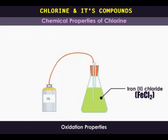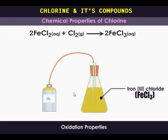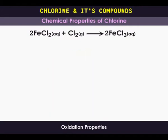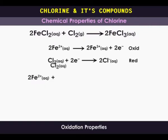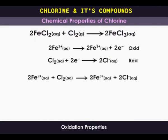When chlorine gas is bubbled into a solution of iron-2 chloride, the color of the solution changes from pale green to yellow, due to the formation of iron-3 chloride. In this reaction, iron-2 ion is oxidized to iron-3 ion by loss of an electron. The electrons are accepted by a chlorine molecule, which becomes reduced to two chloride ions. By accepting the electrons, chlorine is acting as an oxidizing agent.